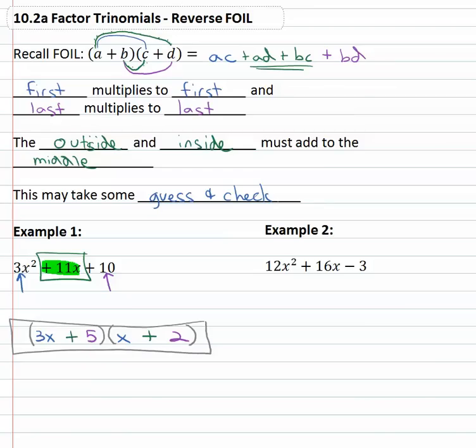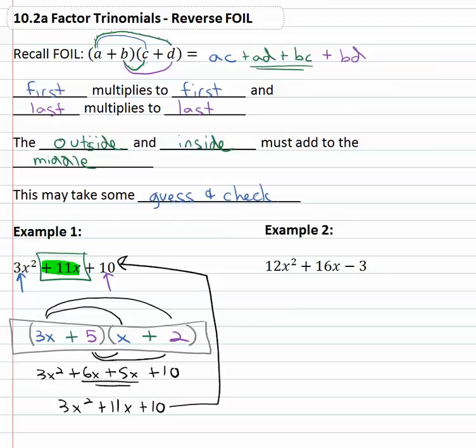Again, we can check our answer if we were to FOIL it out. 3x times x is 3x², 3x times 2 is 6x, 5 times x is 5x, and 5 times 2 is 10. And you see these middle terms now are combined to give us the middle term 11x, and now it does match the original problem. So if you're ever not sure, just multiply it out to check your work.